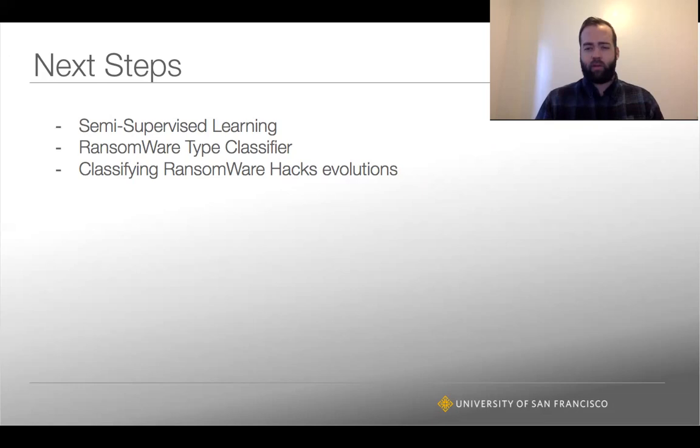We could also build that ransomware type classifier if we were interested in what type of ransomware attack it was, especially as they evolve over time. That might be useful. You could classify which ransomware style it is and then weight more recent ones for an ongoing process. Those kind of tie together. Hopefully we can improve that precision a fair amount - maybe the semi-supervised learning will help us get there and start bringing some more trust to the Bitcoin world. Thanks.